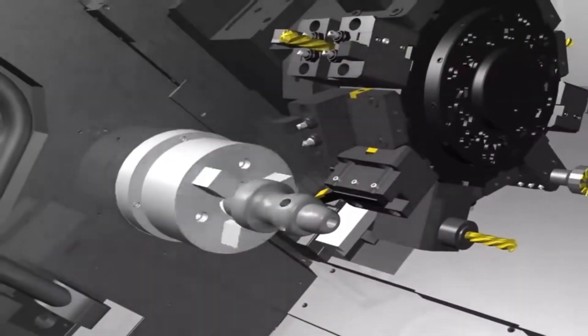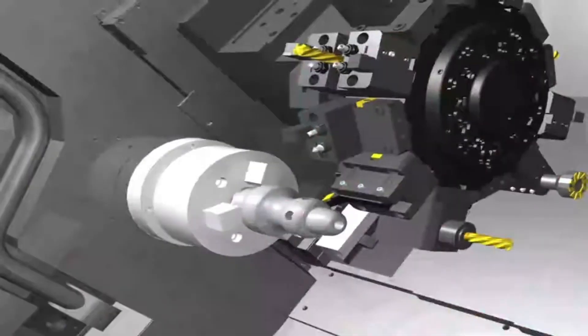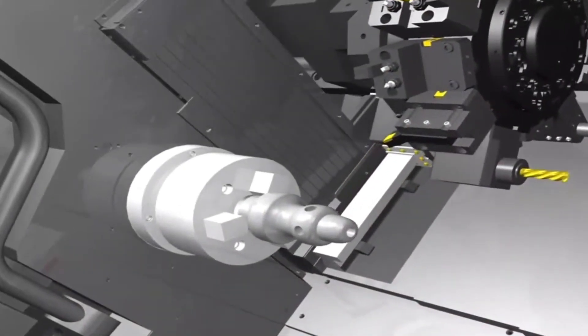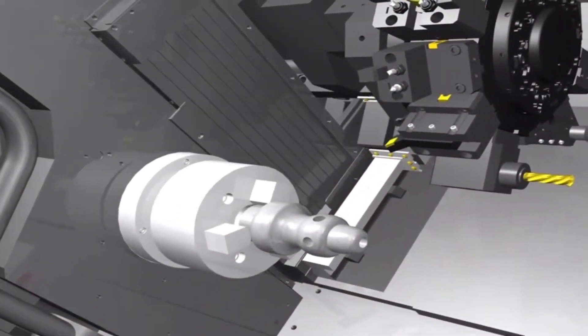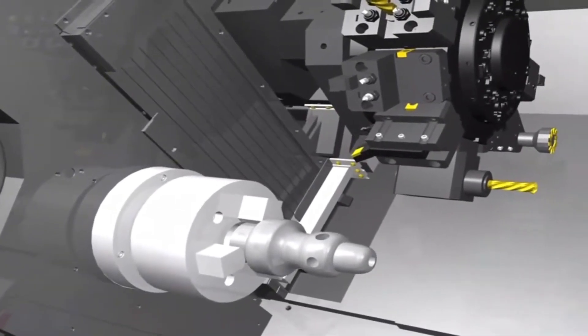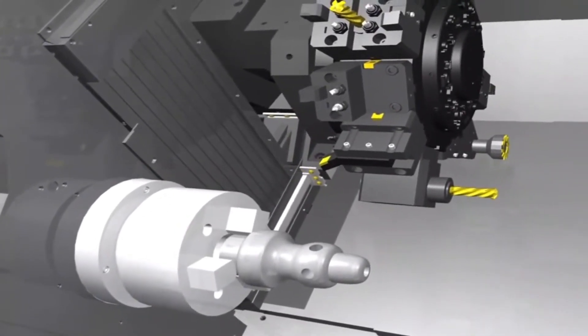When collision occurs, LM1800 TTSY can automatically detect and immediately retract to minimize machine's additional damage. Backspin torque limit option is a standard option.